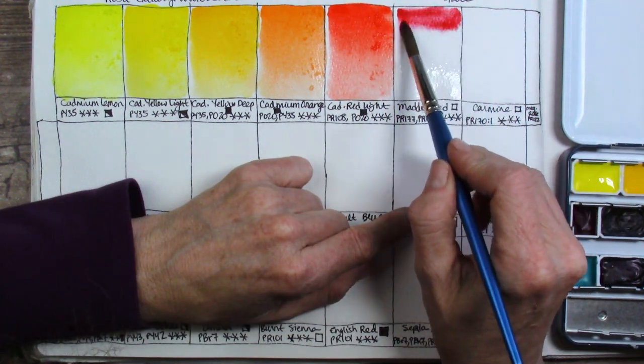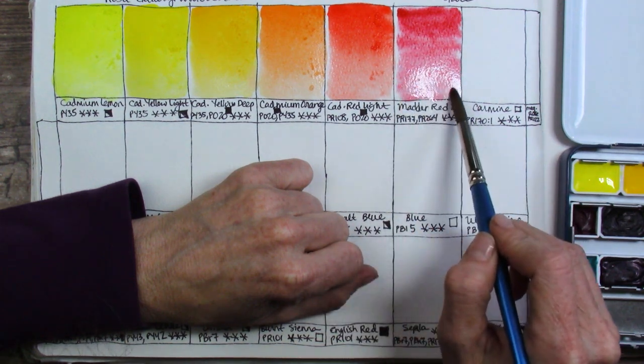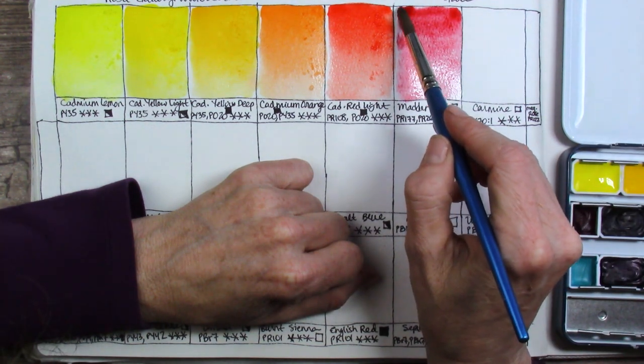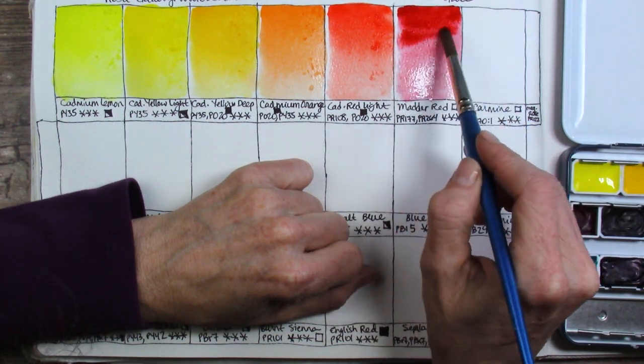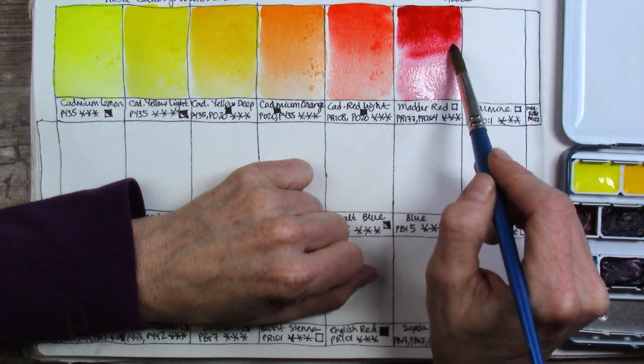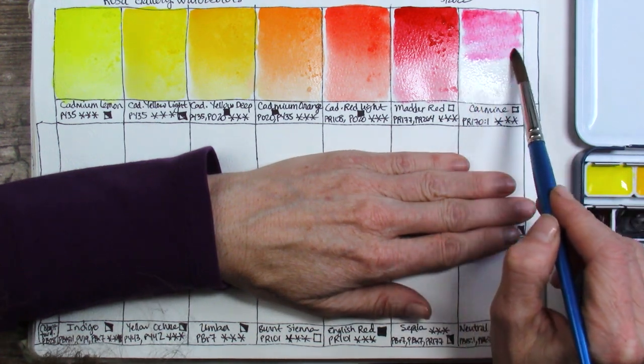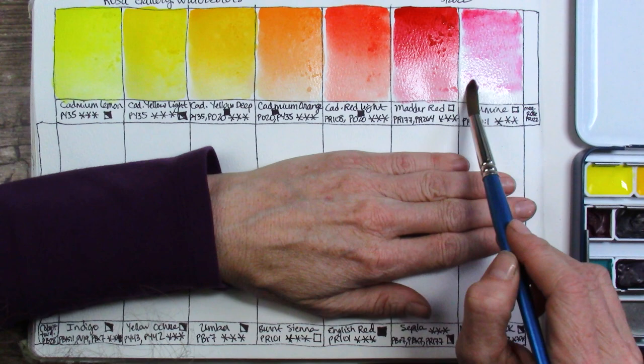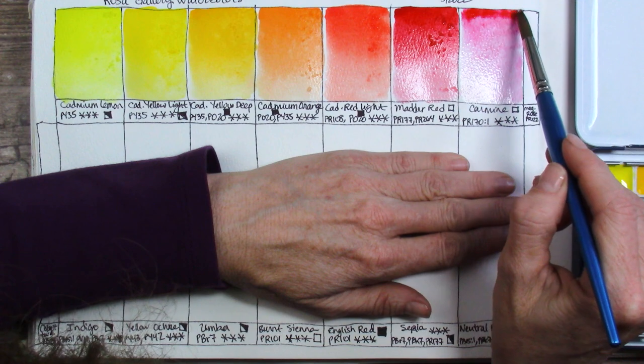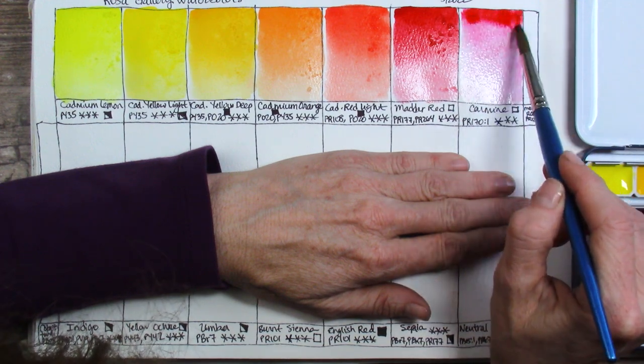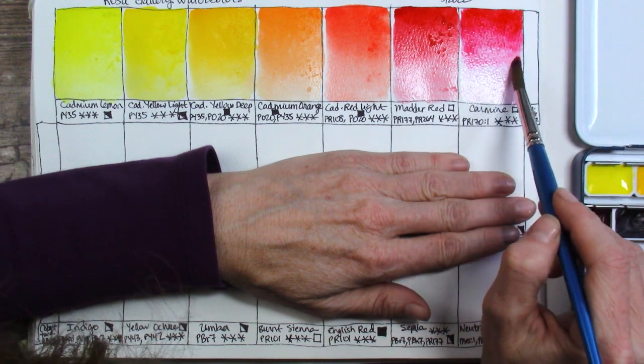This is matter red. Such a beautiful red. Oh my goodness. PR177 so it could be slightly suspect. PR264. It is transparent with three star lightfast rating but it is so pretty. I will be doing my own lightfast testing on these. This one is carmine PR170:1 three star lightfast rating and that one has transparent rating. Another beautiful rose color. Just love that. I don't know much about PR170:1 but I will go look at Kimberly's website and see what she has to say about it.